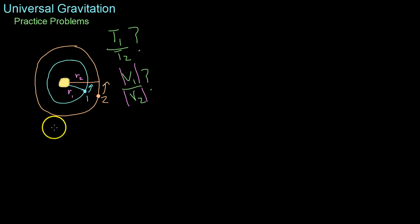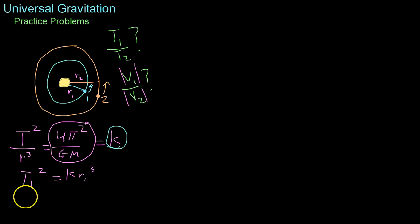So because they're orbiting the same sun, we can start off with Kepler's third law, which states that t squared over r cubed equals four pi squared over gm. But all this term can collectively be written as k. So we know that t1 squared equals k times r1 cubed. Likewise, because this constant is true for all planets involved in the calculation, we know that t2 squared equals k times r2 cubed.